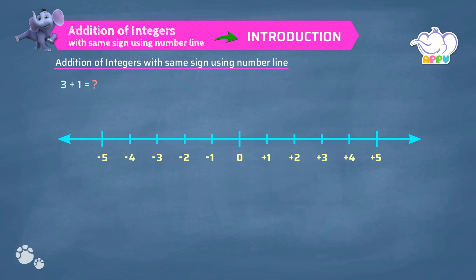We know on a number line, the numbers on the right of 0 are all positive. And the numbers to the left of 0 are all negative.